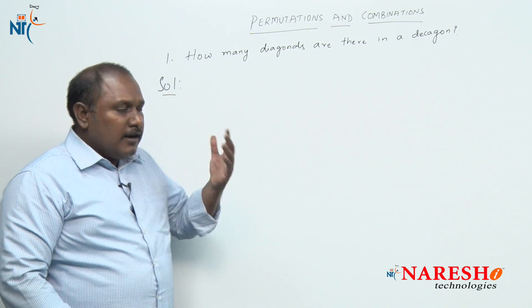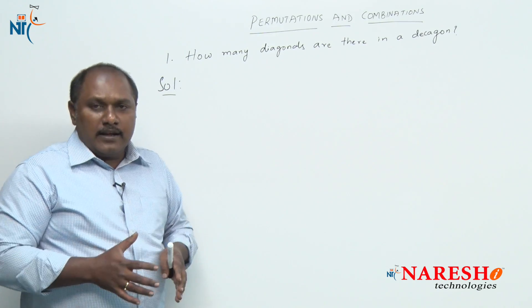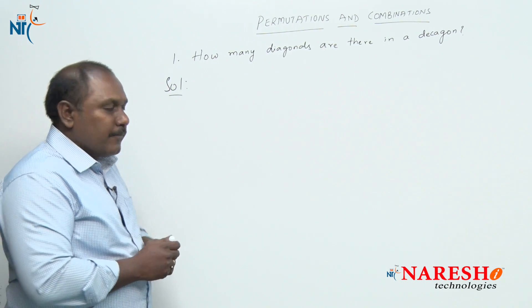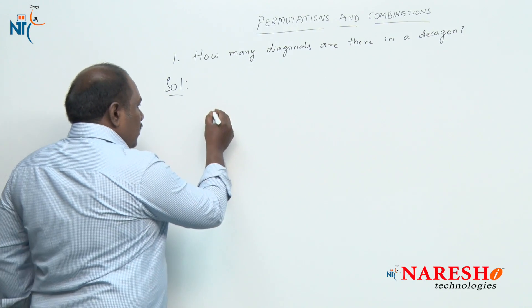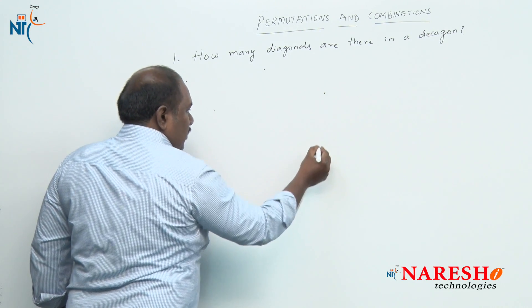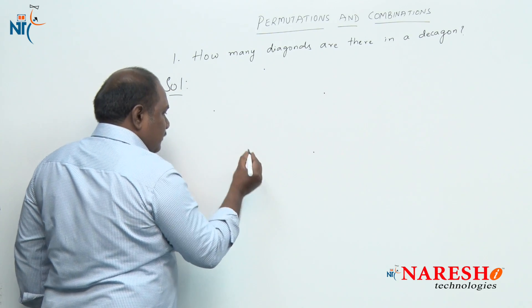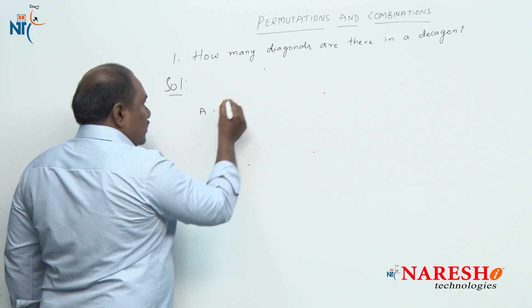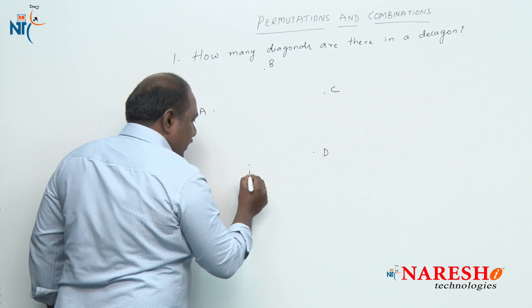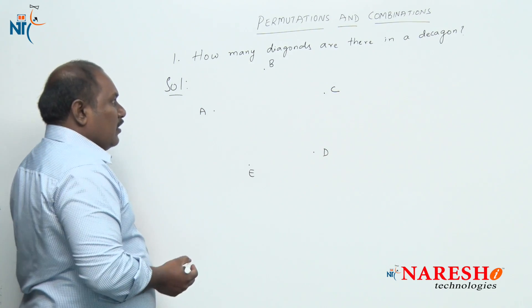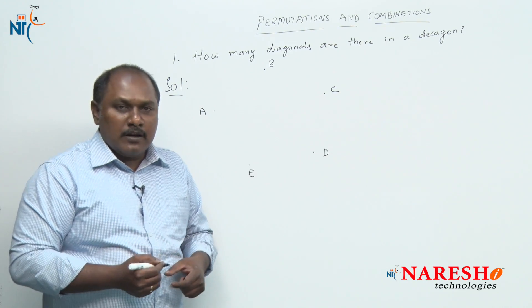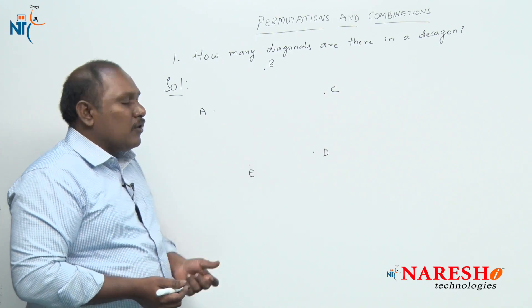Before we answer for the decagon, let us look into how to find the number of diagonals in a pentagon in a general way. As we said, to construct a pentagon, we require five non-collinear points. Let us suppose these are the five non-collinear points A, B, C, D, E. Now, let us try to draw all the line segments possible using these five non-collinear points.